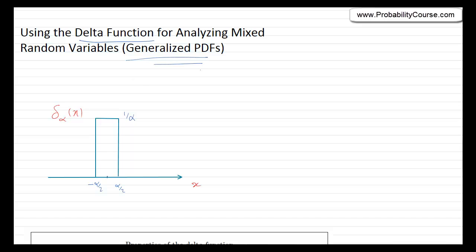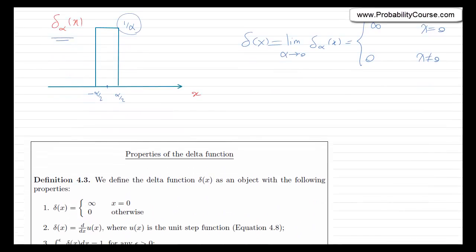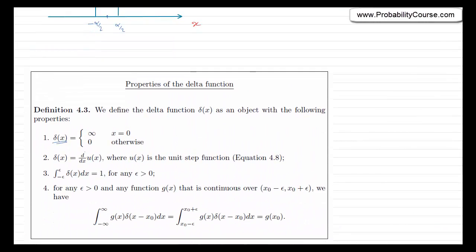Remember that in the previous video, we introduced the delta function. In particular, we looked at delta_alpha of x and then introduced the delta function as the limit as alpha goes to 0 of delta_alpha of x. Here, 1 over alpha goes to infinity as alpha goes to 0. So, the value was infinity at x equals 0 and it was 0 for all other values of x. We discussed properties of this delta of x: delta of x is infinity at 0 and 0 otherwise.